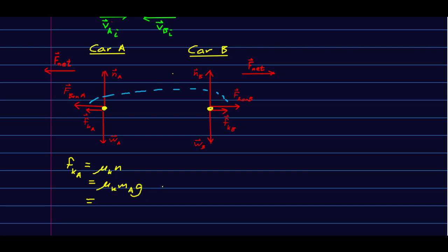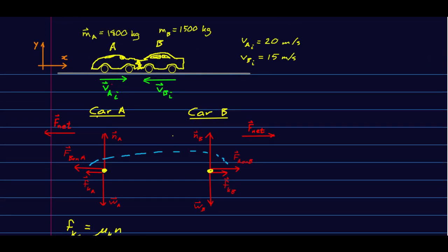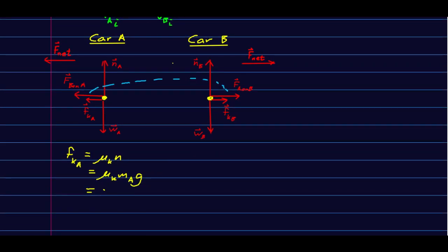So we can just say mu K N is mu K Mg, M A G. Rubber on concrete - these cars' wheels are locked, so mu K for rubber on pavement, 0.8 is fairly typical on dry pavement. So then we've got 1,800 kilograms times G, which is more or less 10, and that comes out to about 1.4 times 10 to the 4 Newtons. Now, that's a big force.